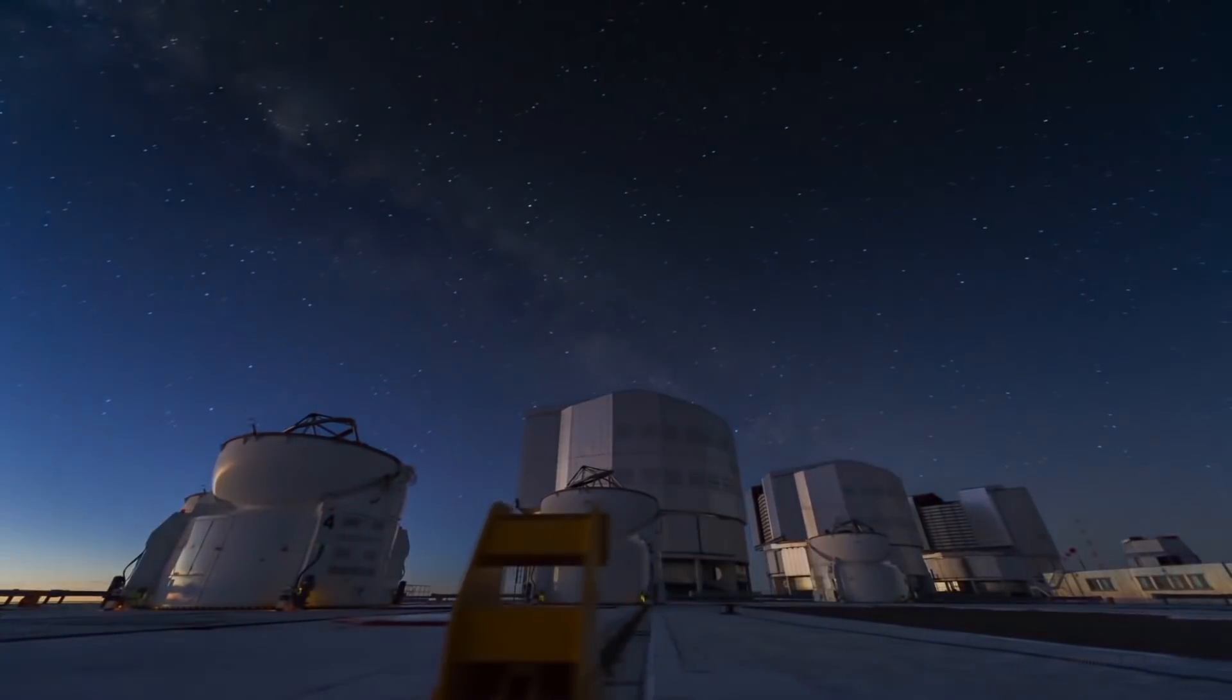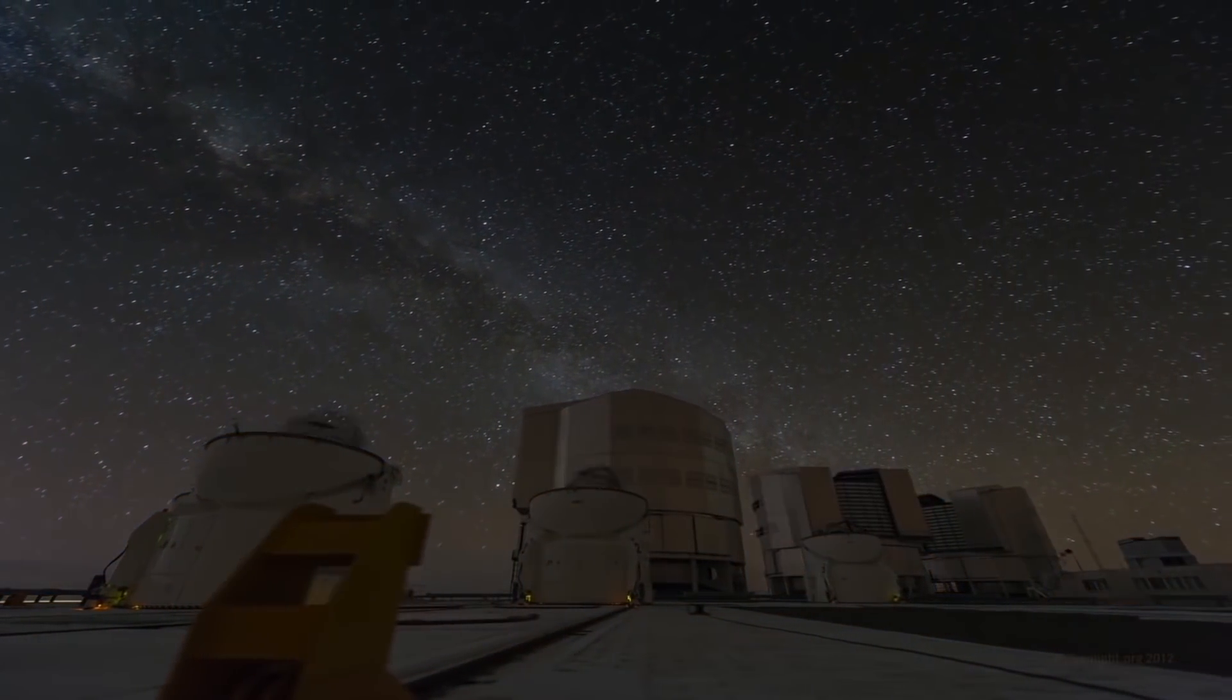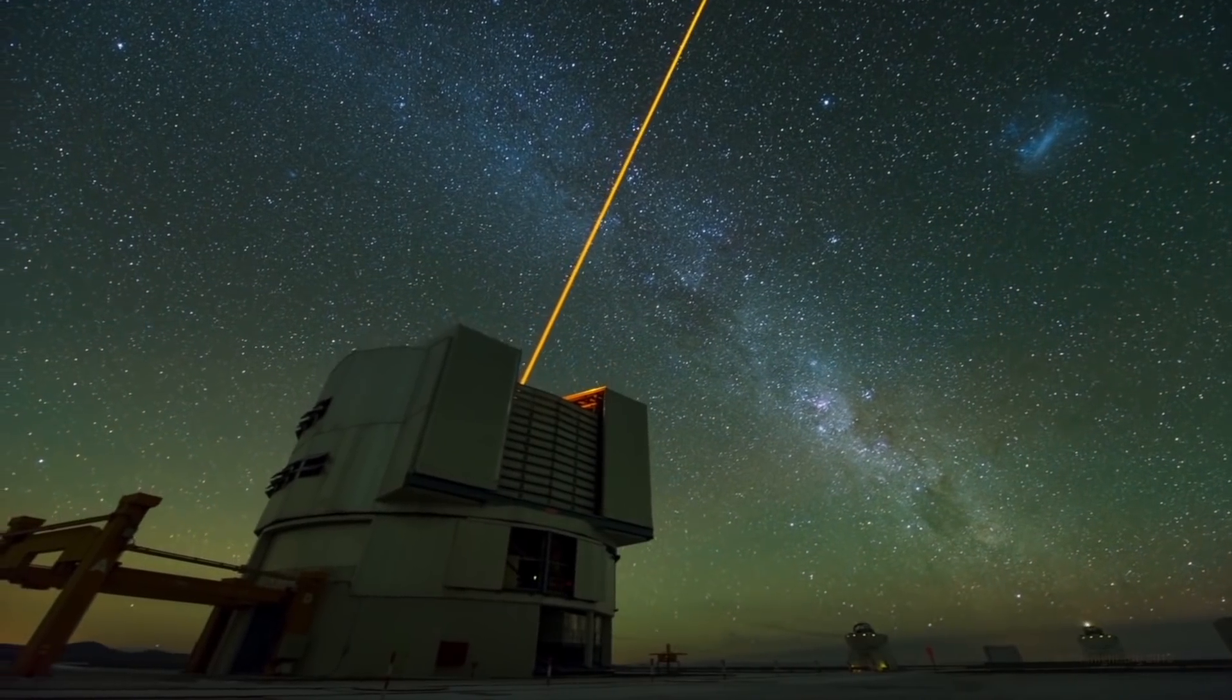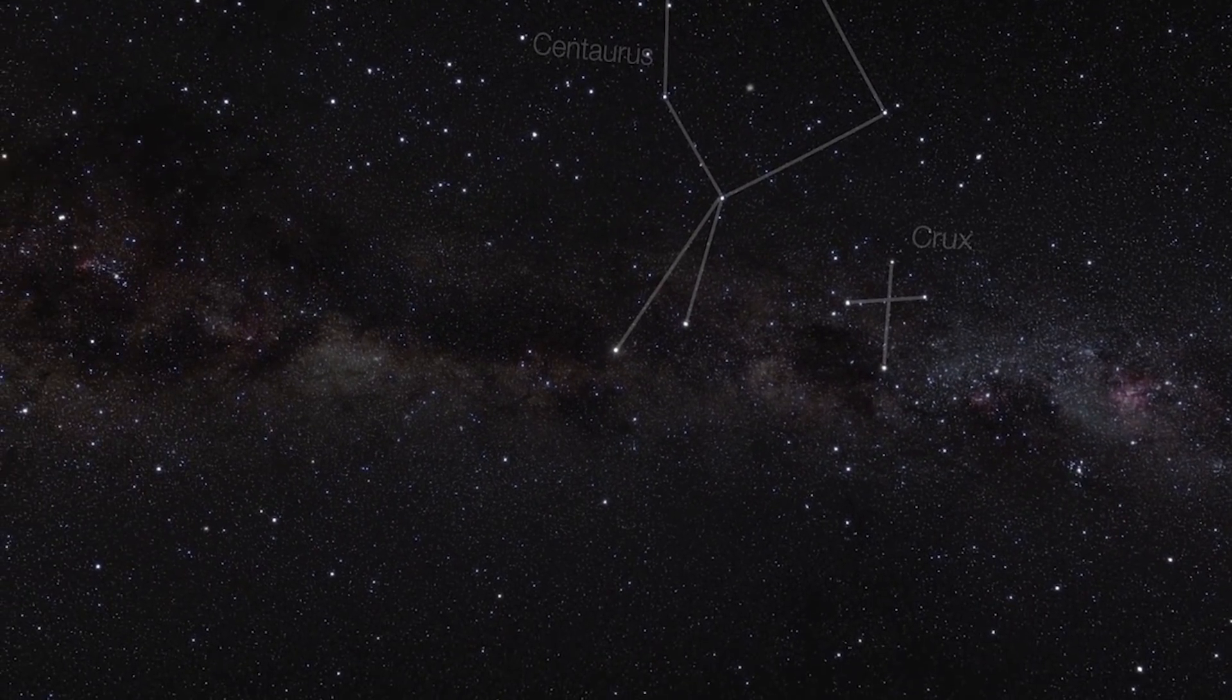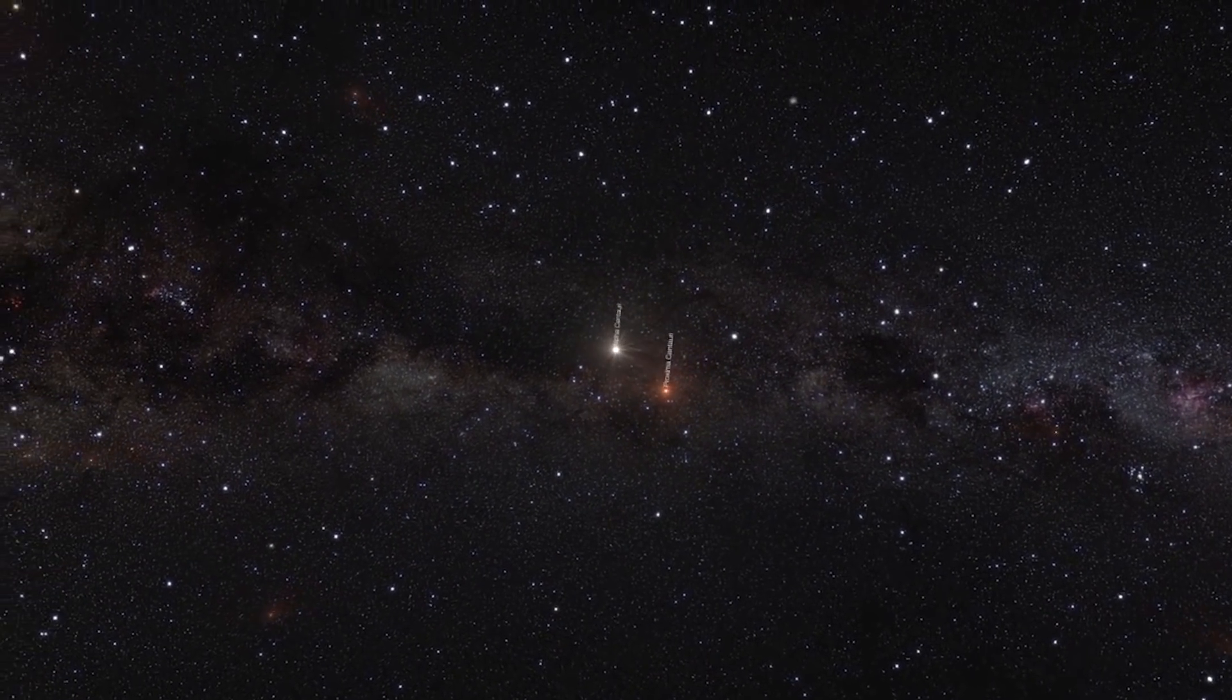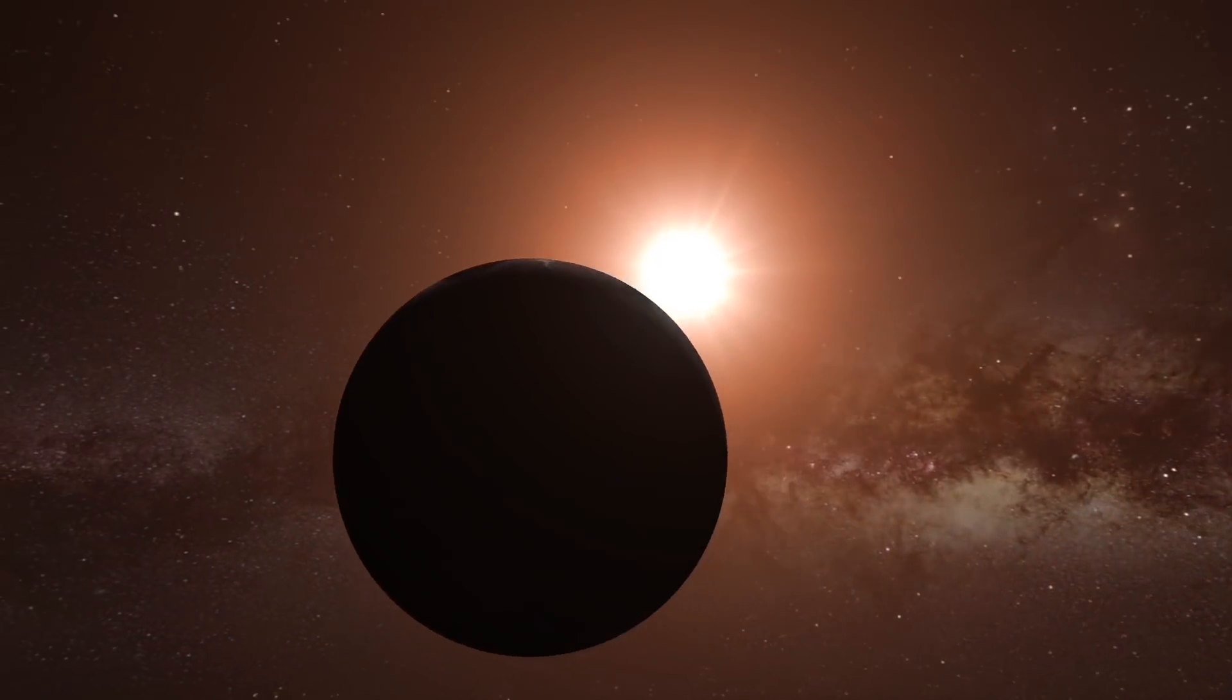In 2016, the European Southern Observatory reported finding an exoplanet that appears to be the closest to us. Proxima Centauri b, or Proxima b for short, is located in the habitable zone of the star Proxima Centauri. This means that there could be life on it.